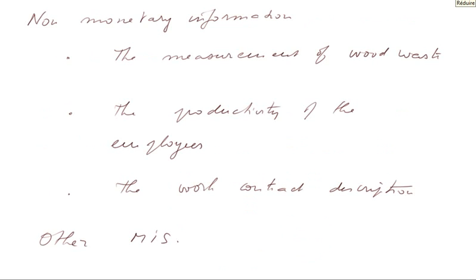Examples of non-monetary pieces of information: for instance, the measurement of wood waste, or the productivity of the employees, or description of the work contracts. All these things are important information that the management team must be aware of, but they are recorded and managed using other MIS.